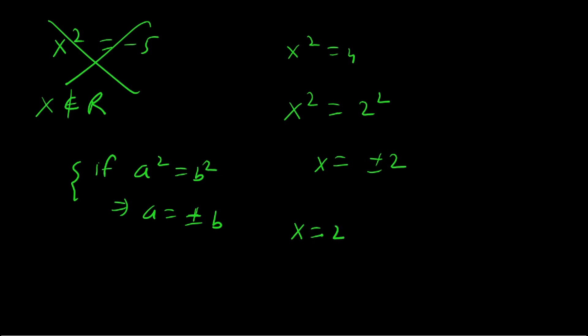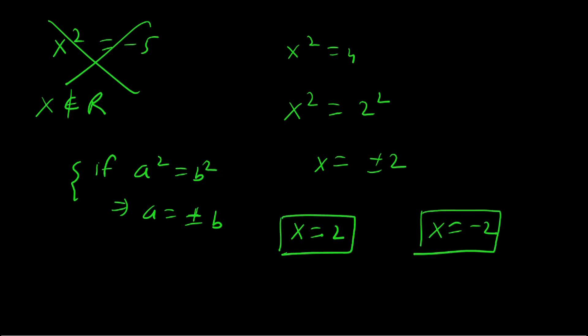We have two possible values of x: x = 2 and x = −2. I hope you enjoyed this video. See you in the next video. Till then, take care and bye bye.